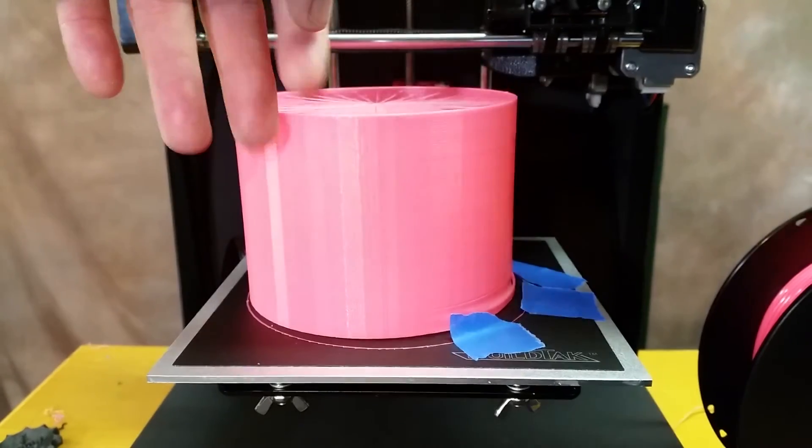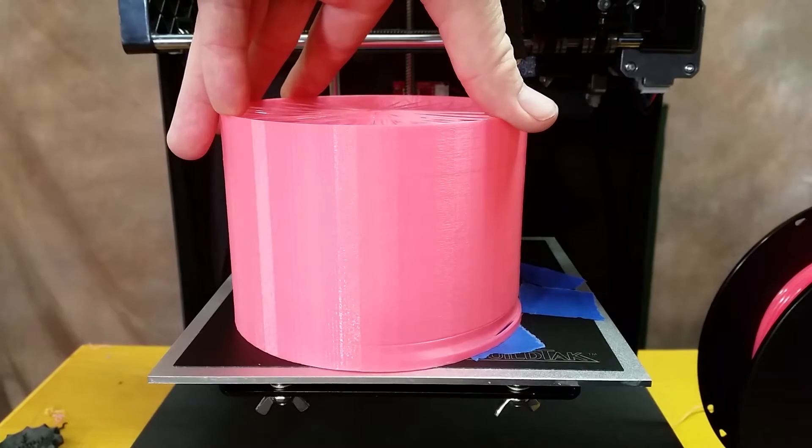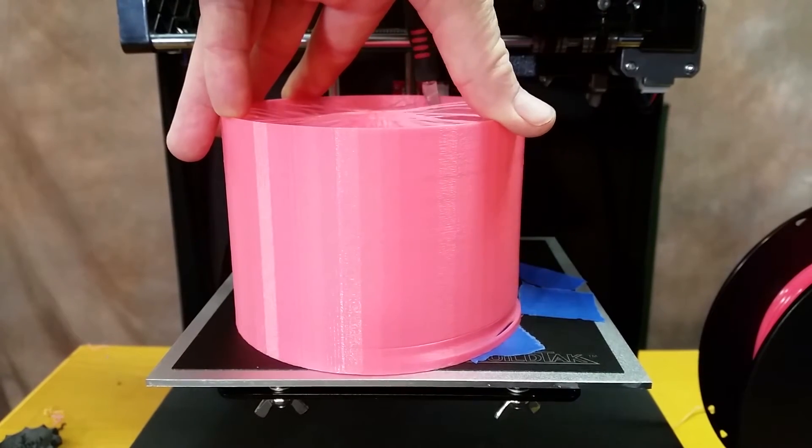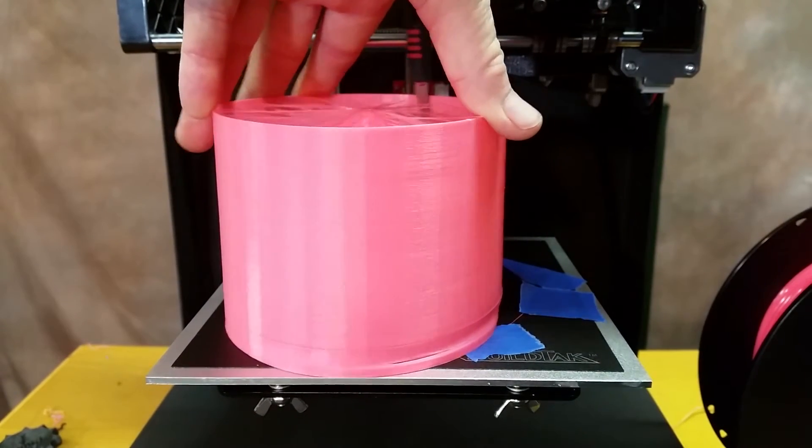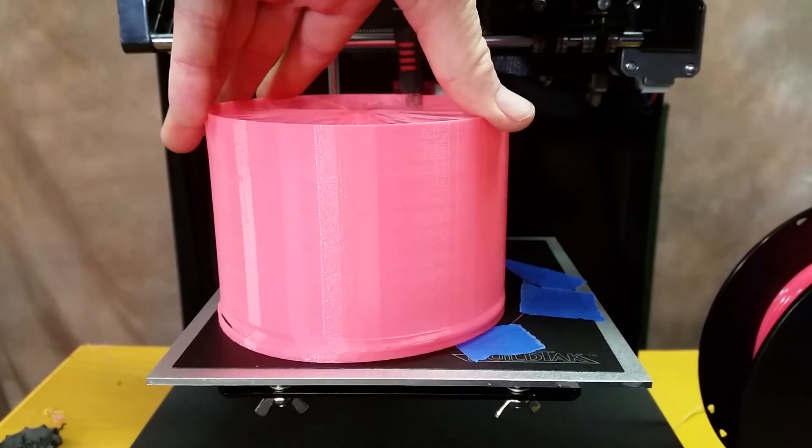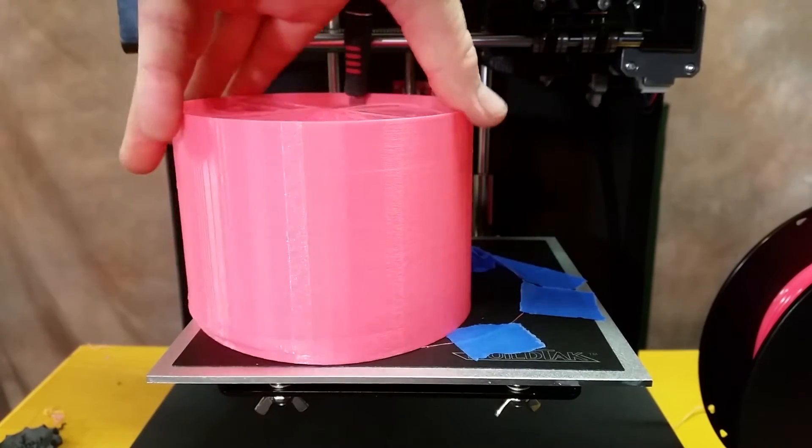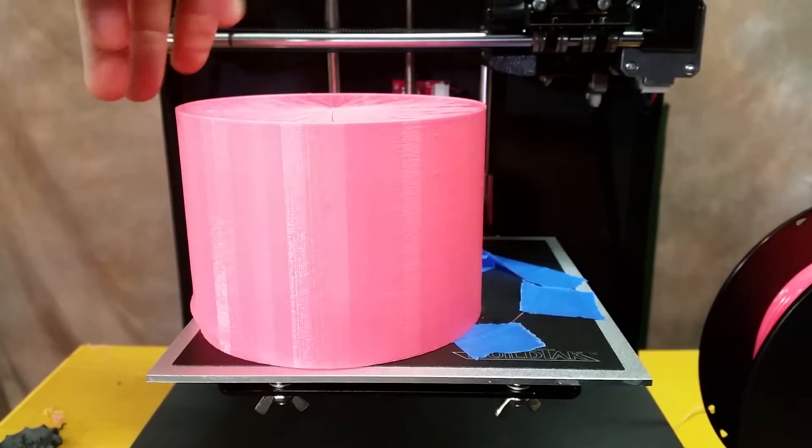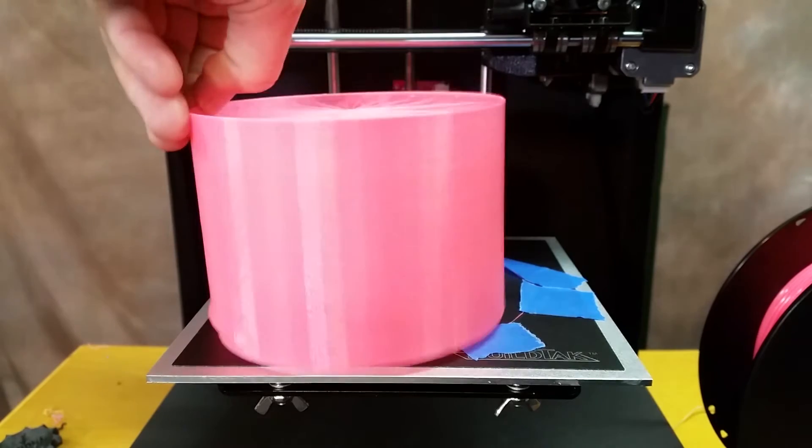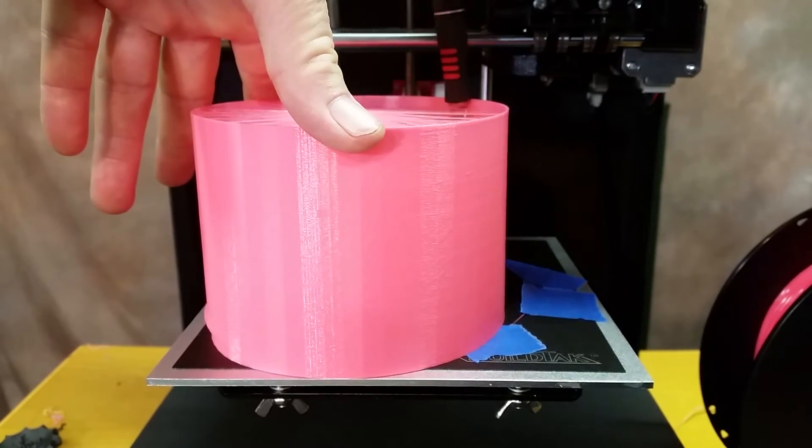It does look like it printed. Oh wow, popped these just like the other one did. My BuildTak's not holding on like it once did. I've been rubbing it down with rubbing alcohol before each print and it's been done already. But with these very thin walls, it just doesn't hold up so hot.